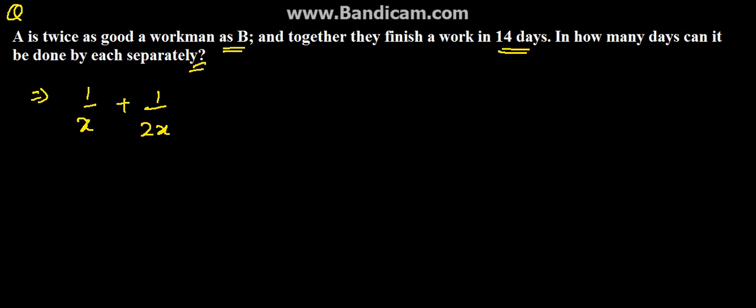And they both together working takes 14 days, so which will be equal to 1 upon 14. So here by solving this, by making the denominator same, multiplying this by 2, here we get 2 plus 1 is 3, 3 upon 2x equal to 1 by 14.